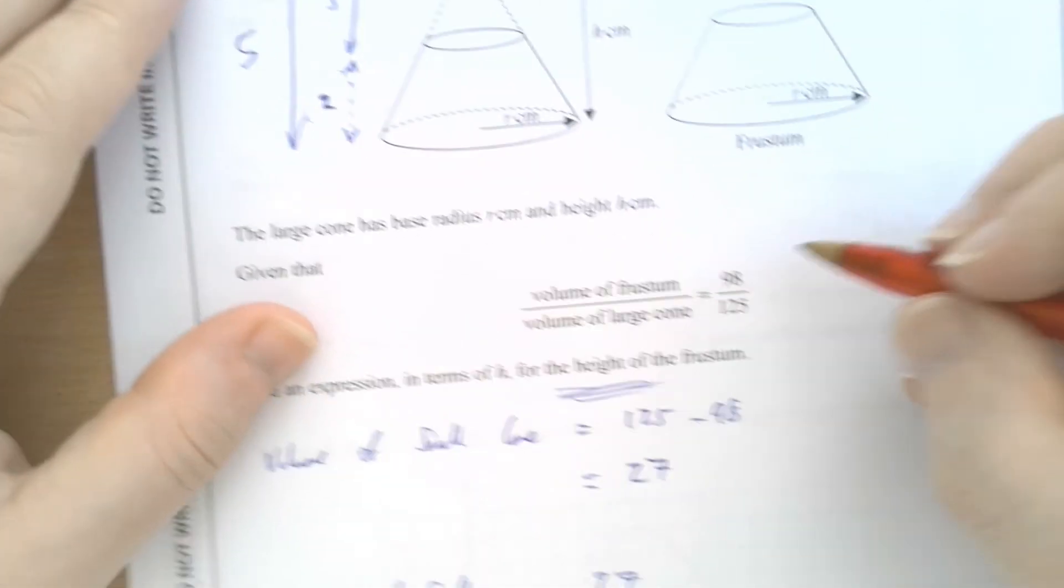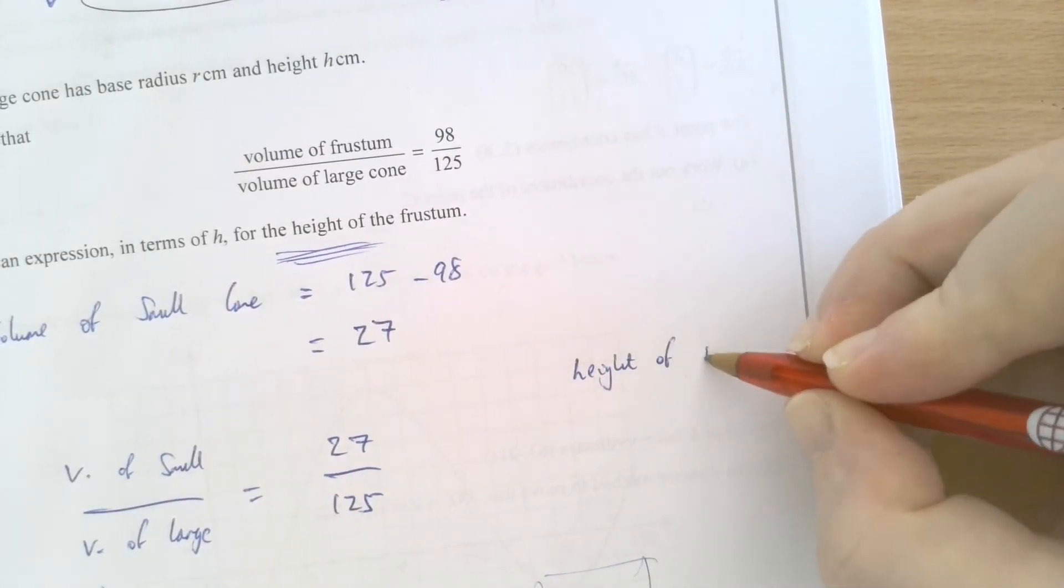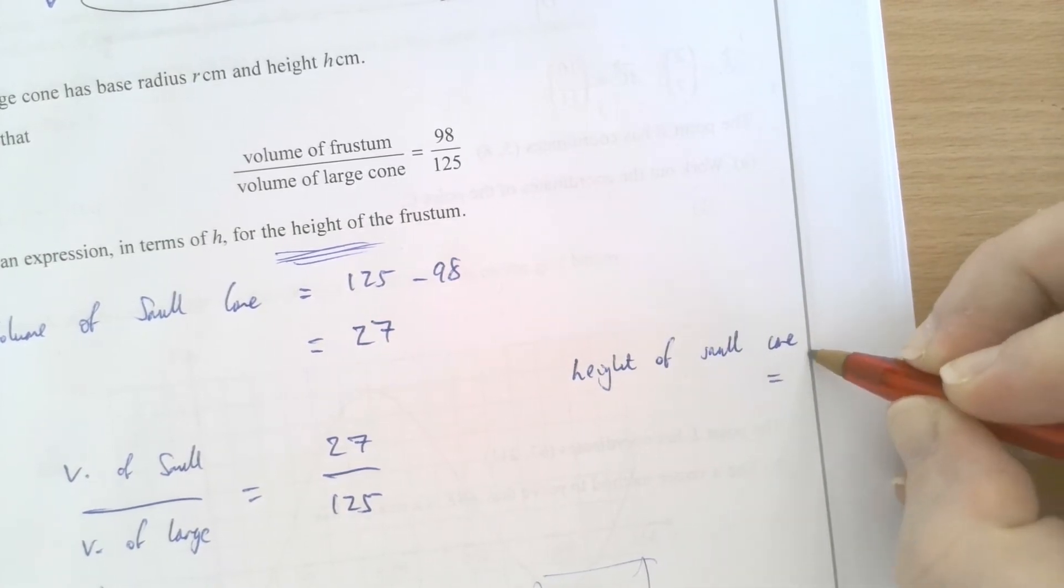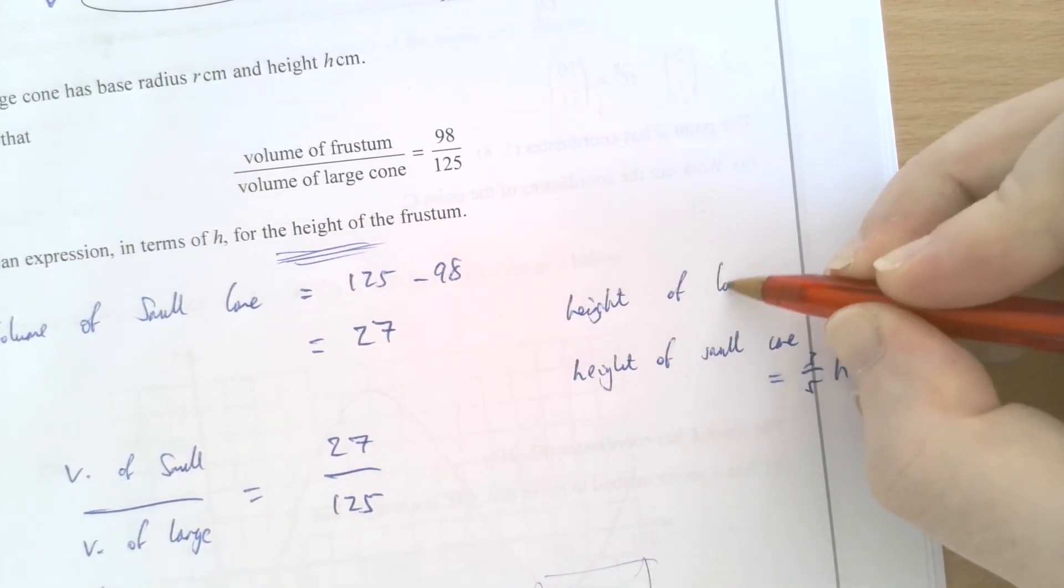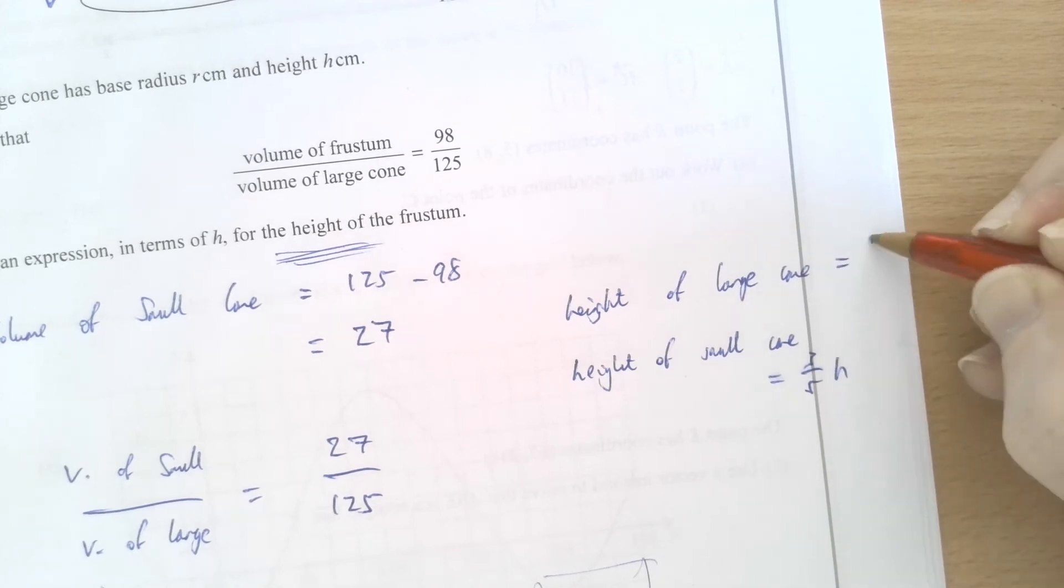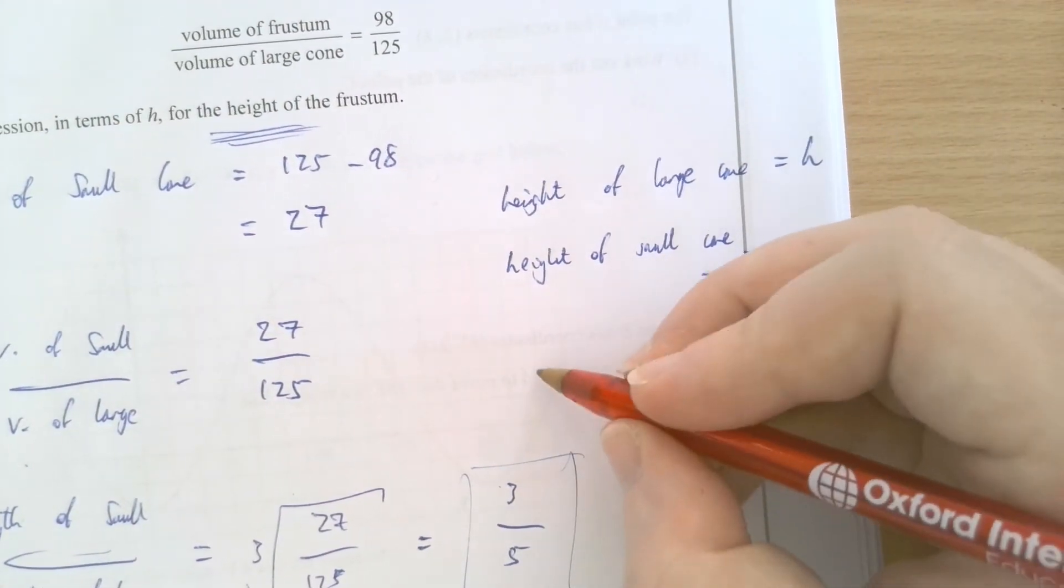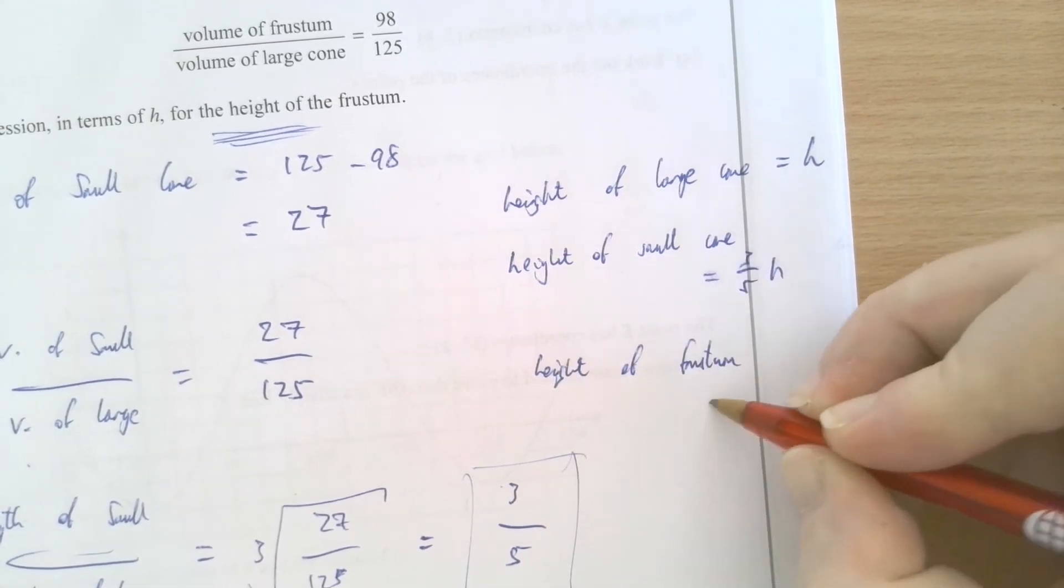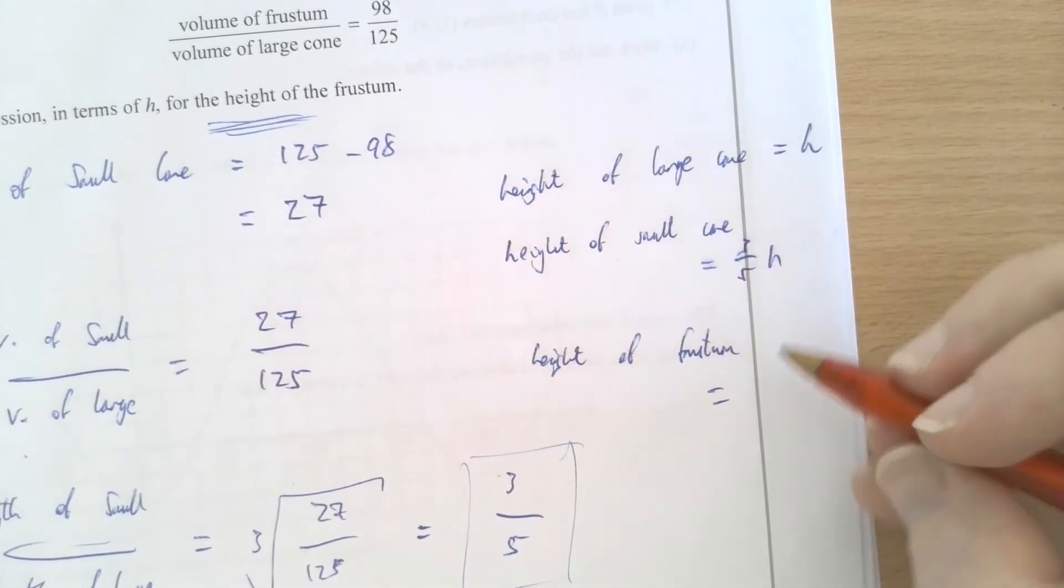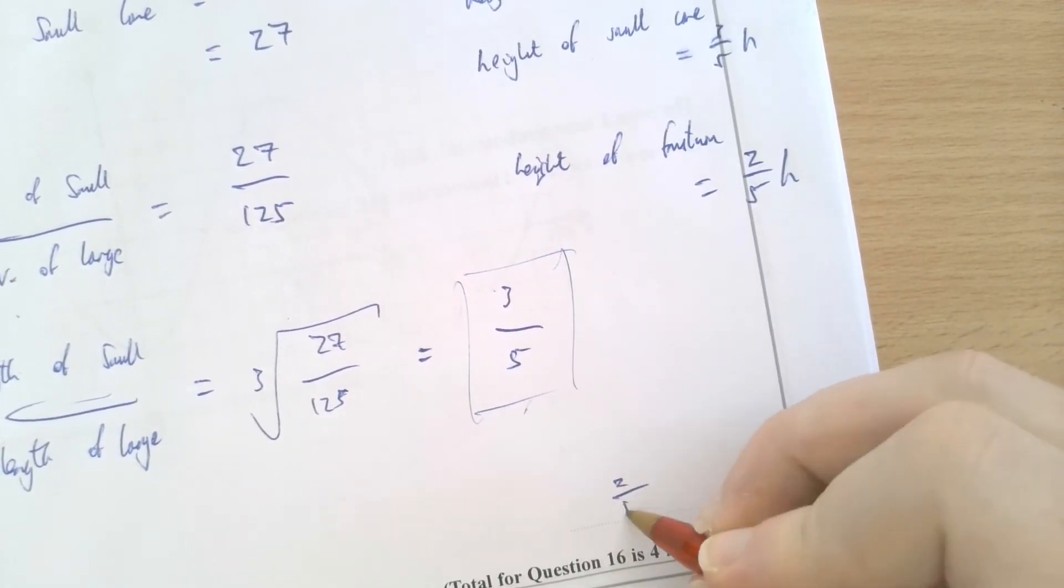But in essence, the height of the small cone is 3 fifths of h. And we get that from knowing the height of the large cone is just h. And we can see from the proportionality reasoning that 3 fifths of the height is the small cone. And from that, we can derive that the height of the frustum is the difference between 3 fifths of h and h, which is just 2 fifths of h. 2 fifths of h is the answer to this question.